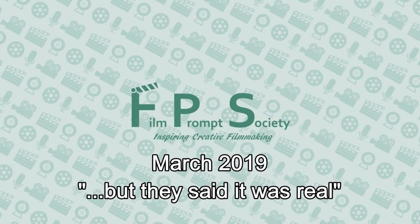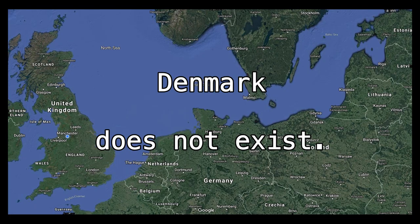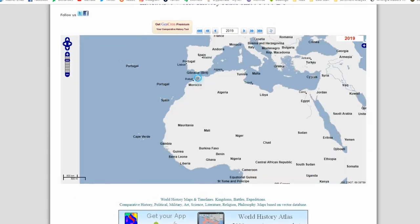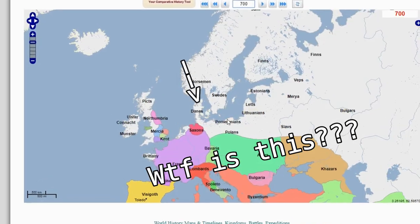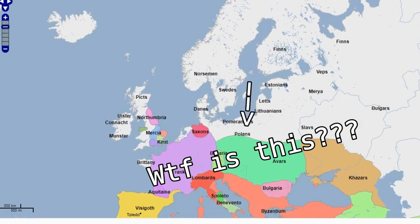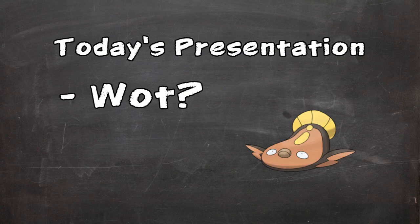This video was made in response to the challenge set by the Film Prompt Society. 'Denmark does not exist' is definitely a phrase that some people have used at one point or another — most likely before the 8th century when Denmark was supposedly formed. How they knew what Denmark was is outside the scope of this video. What I'm here to discuss is... what?